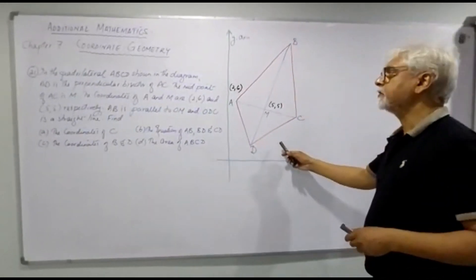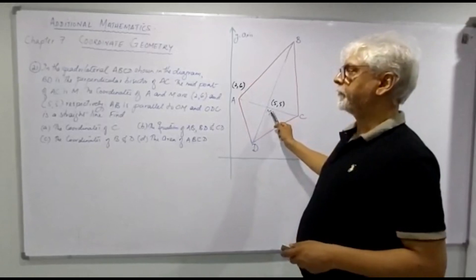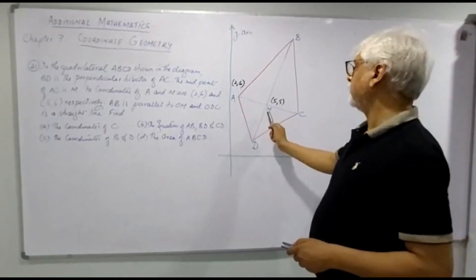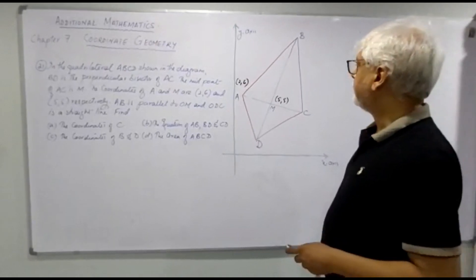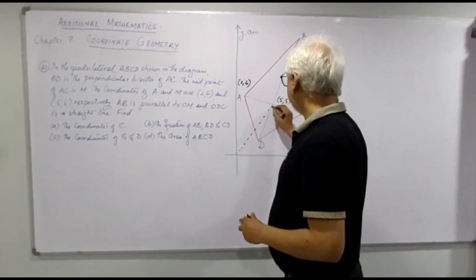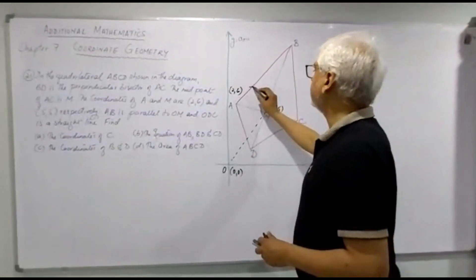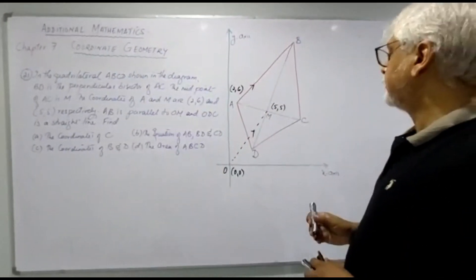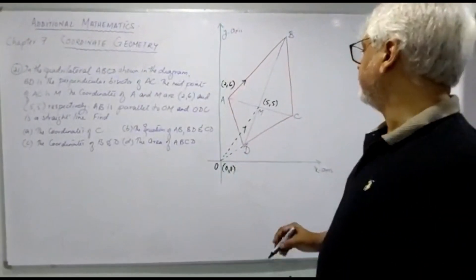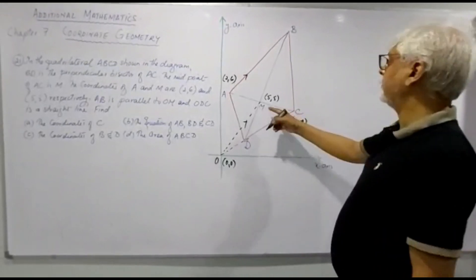In the quadrilateral ABCD shown in the diagram, BD is perpendicular to AC and M is the midpoint of AC. The coordinates of A are (2, 6) and the coordinates of M are (5, 5). AB is parallel to OM, where O has coordinates (0, 0). ODC is a straight line. We need to find the coordinates of C first.